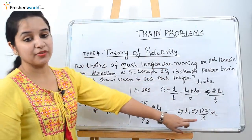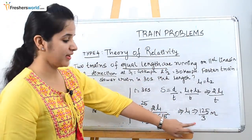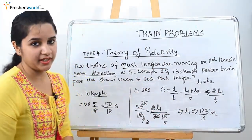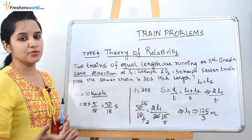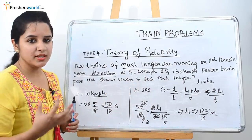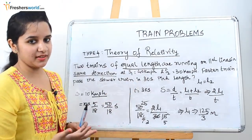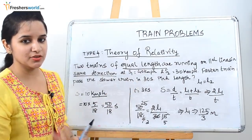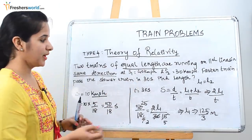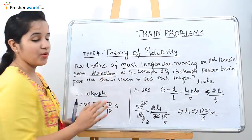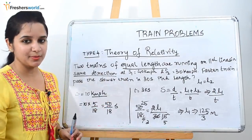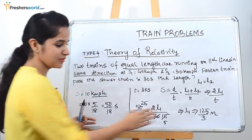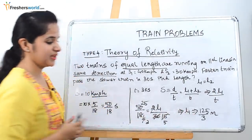Once you simplify it, you will find the length of the train. Sometimes to confuse you, they will ask what is the length of the faster train or the length of the slower train. But as we know the trains are of equal length, whatever the type of train, the length is always going to be the same.